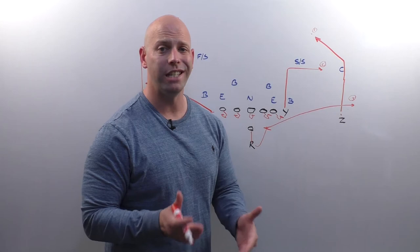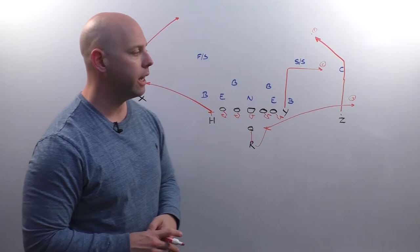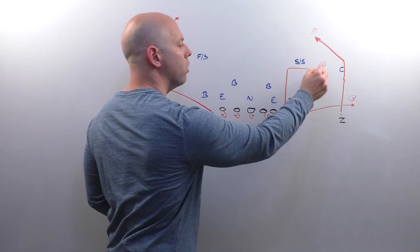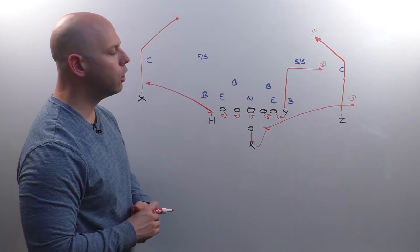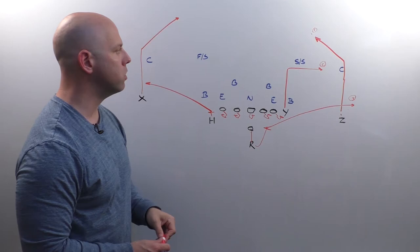This is also probably the place that I like this route concept the most is against cover zero. And because of the fact that you'll get the strong safety cleared out of the way and get the break on the corner to the inside with nobody in the middle of the field. Deep to middle to short there. And that's going to give you a good look at a vertical stretch concept that you can use there.